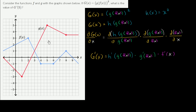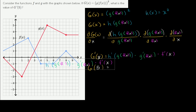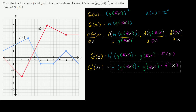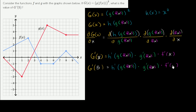Going from this form, the question they're asking isn't too bad. We want to know what G prime of 5 is, so everywhere we see an x, let's change it to a five. So G prime of 5 equals h prime of g of f of 5, times g prime of f of 5, times f prime of 5.